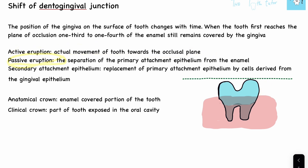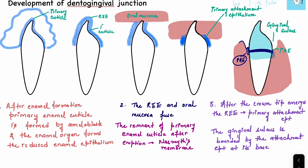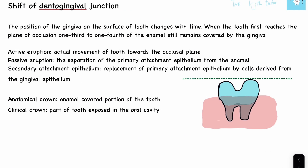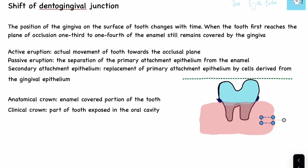The second process is passive eruption. The attachment epithelium is present here, and in passive eruption, the oral mucosa starts moving downwards — due to age or some pathology. As the oral mucosa recedes downward, the primary attachment epithelium also recedes and moves along with the gingiva, eventually becoming attached to the cementum instead of the enamel.